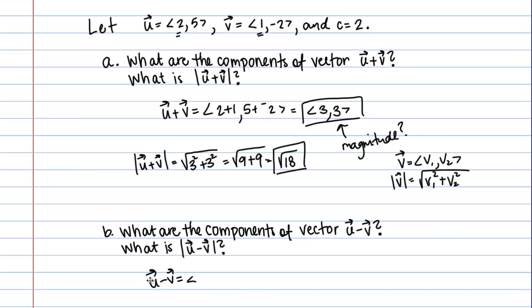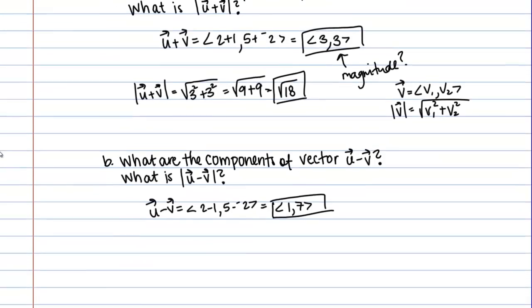So vector U minus vector V. I'm going to take the X components of the two vectors and subtract them, and then the Y components of the two vectors and subtract them. Then I should have in that case 2 minus 1 comma 5 minus negative 2, and that looks like it's going to get me 1 and 7.